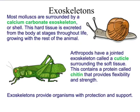Exoskeletons — mollusks are a typical example — are surrounded by a calcium carbonate exoskeleton or shell. Shells you normally see around the beach are those exoskeletons. It's a hard tissue, excreted from the body at stages throughout life, and it grows with the rest of the animal. Arthropods and insects have a jointed exoskeleton called the cuticle, which surrounds the soft tissue. It's made out of a protein called chitin, which produces flexibility and strength.